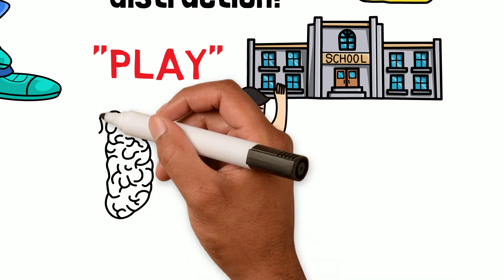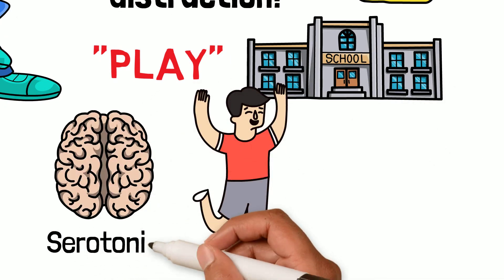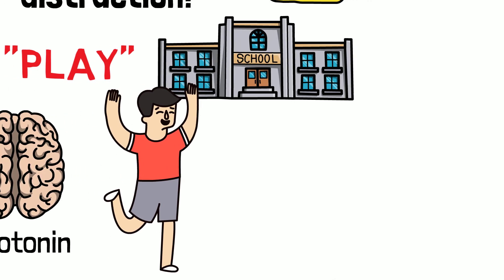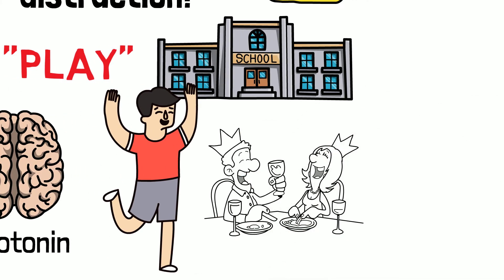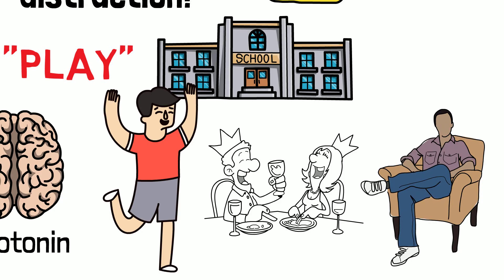Play is addictive. It releases a large amount of serotonin to the brain. And as adults, play can be anything from enjoying a drink at a bar with friends to relaxing in front of the television.